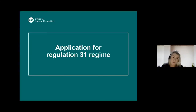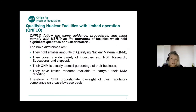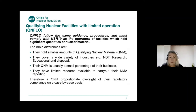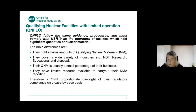Following the same guidance, procedures and processes, QN flows must comply with NSR 19 as the operators of facilities which hold significantly larger quantities of nuclear material. The main differences are that they hold smaller amounts of qualifying nuclear material, cover a wide variety of industries — including NDT, research, educational and disposal — and their qualifying nuclear material is usually a small percentage of their business. They have limited resource available to carry out nuclear materials accountancy reporting, and therefore the safeguards team at ONR must be proportionate and have proportionate oversight of their regulatory compliance on a case-by-case basis.